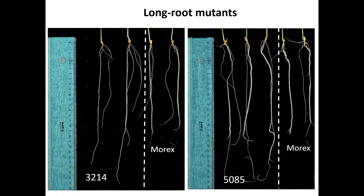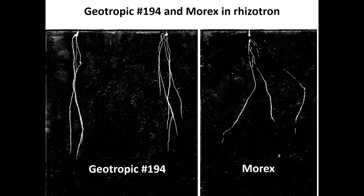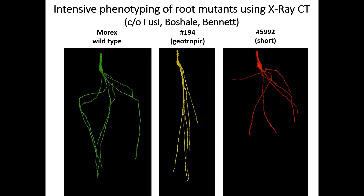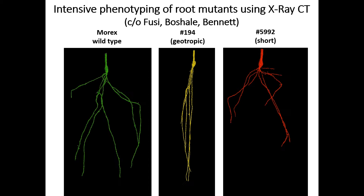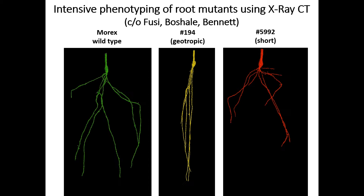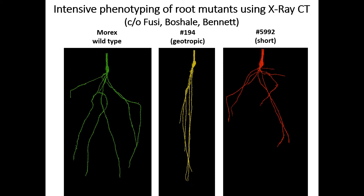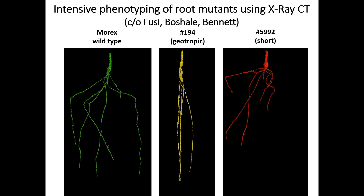These are two examples of long root mutants with significant differences between Morex and the mutants. This is what we call a geotropic mutant affecting root angle — this is Morex and these are the mutants; they go straight down. This image was made by our student Ricardo Fusi in Michael Bennett's lab in Nottingham. You can see Morex the wild type, the short mutant phenotype, and the geotropic phenotype — a 3D image really adds depth into the phenotype.